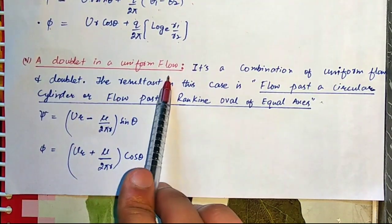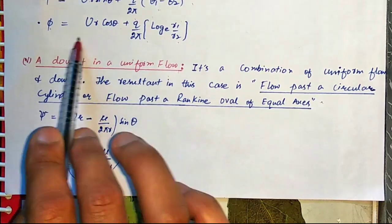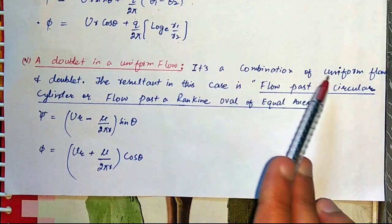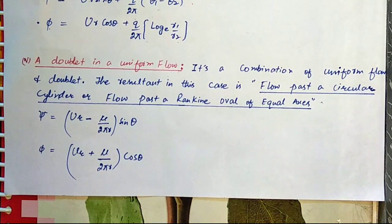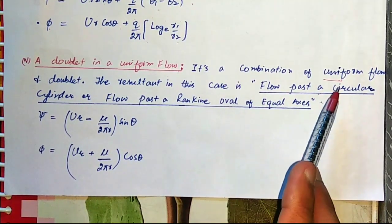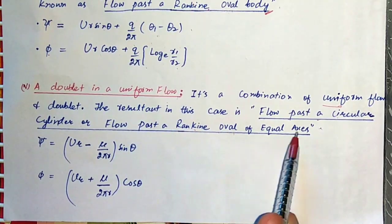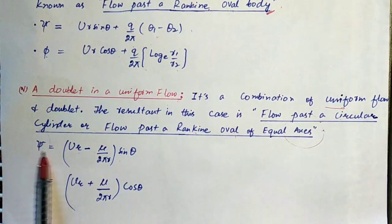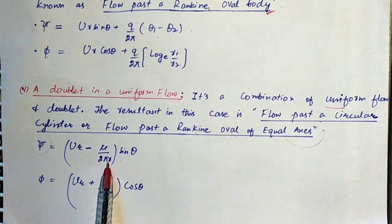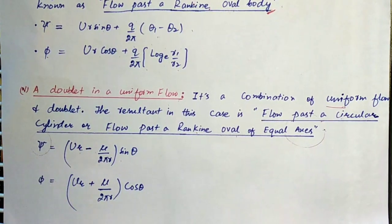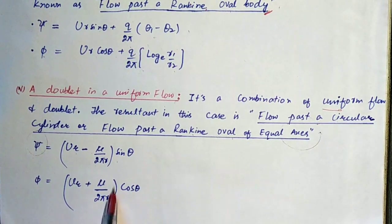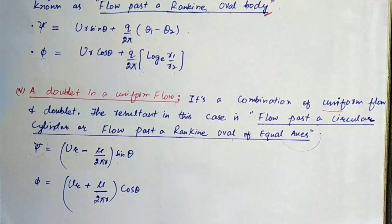The last case of superimposed flow is a doublet in a uniform flow — a combination of uniform flow and a doublet. The result in this case is known as flow past a circular cylinder or flow past a Rankine oval of equal axes. The stream function equals U·r minus mu upon 2π multiplied by r·sin(theta), where mu is the doublet strength. The potential function equals U·r plus mu upon 2π multiplied by r·cos(theta). Using these formulas, we can find out stream function and potential function for a doublet in a uniform flow.